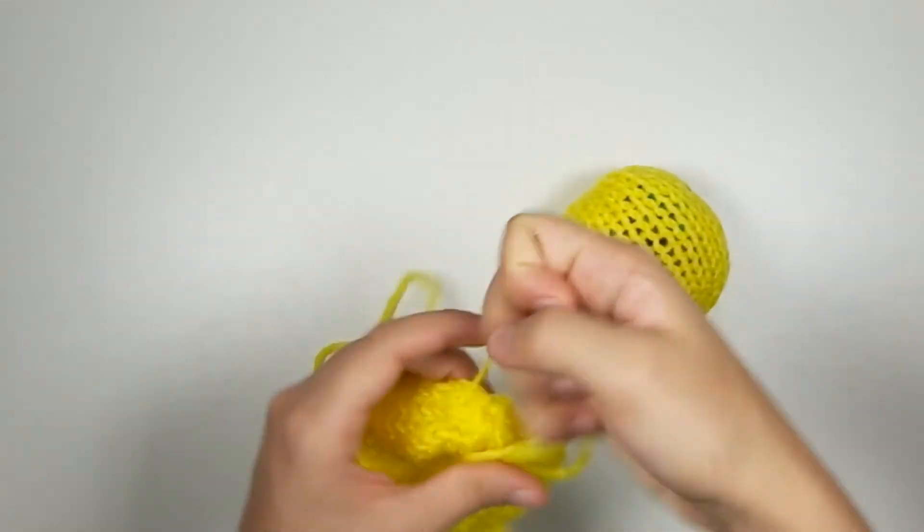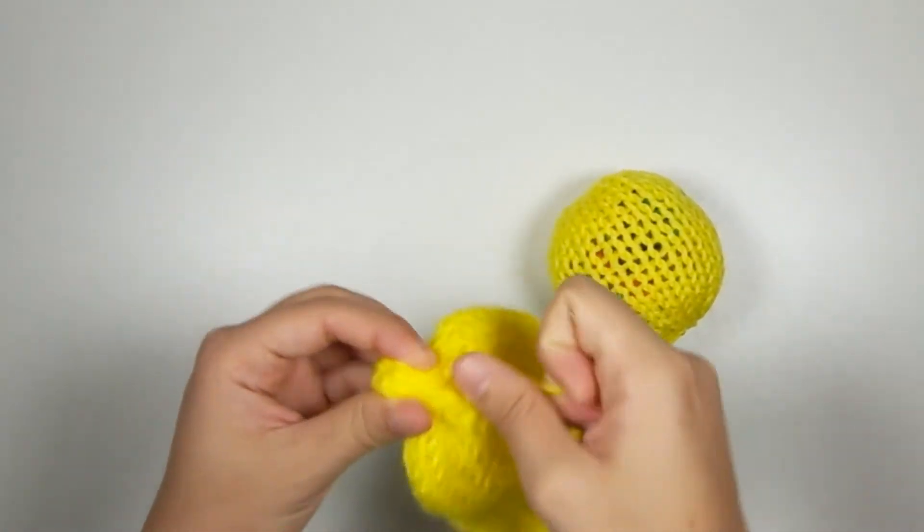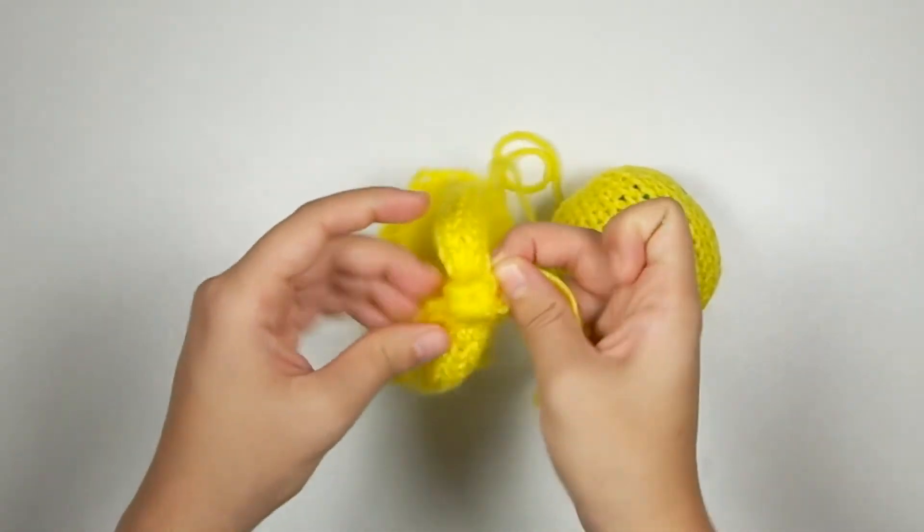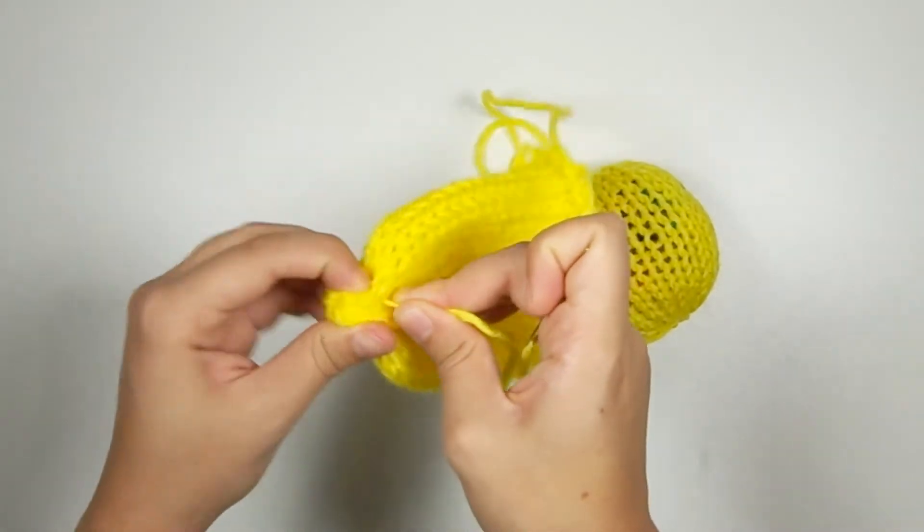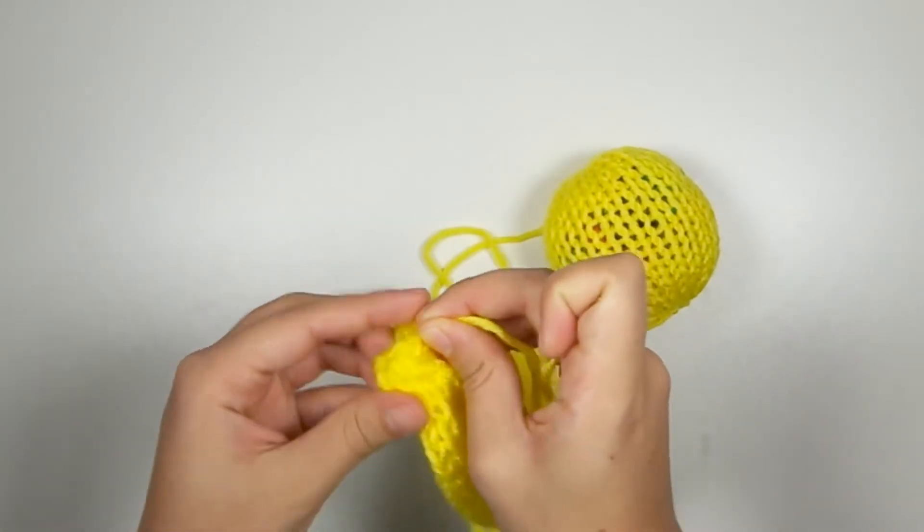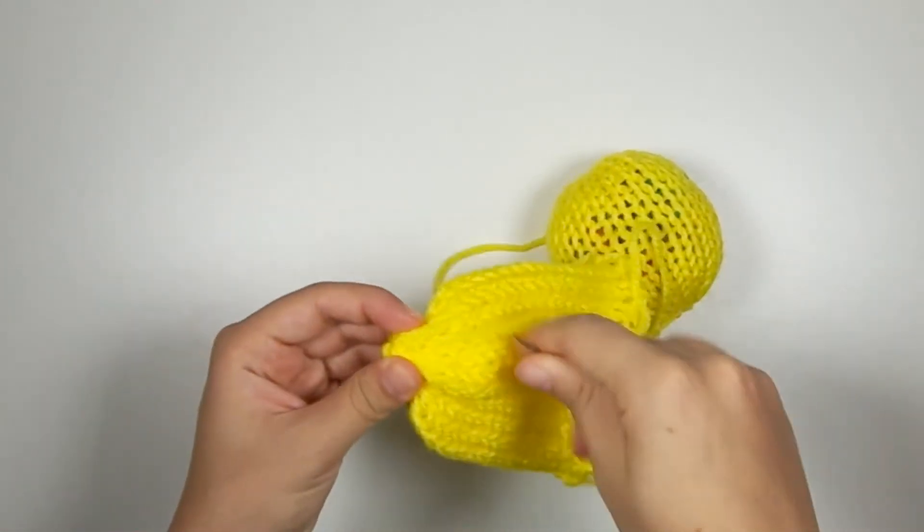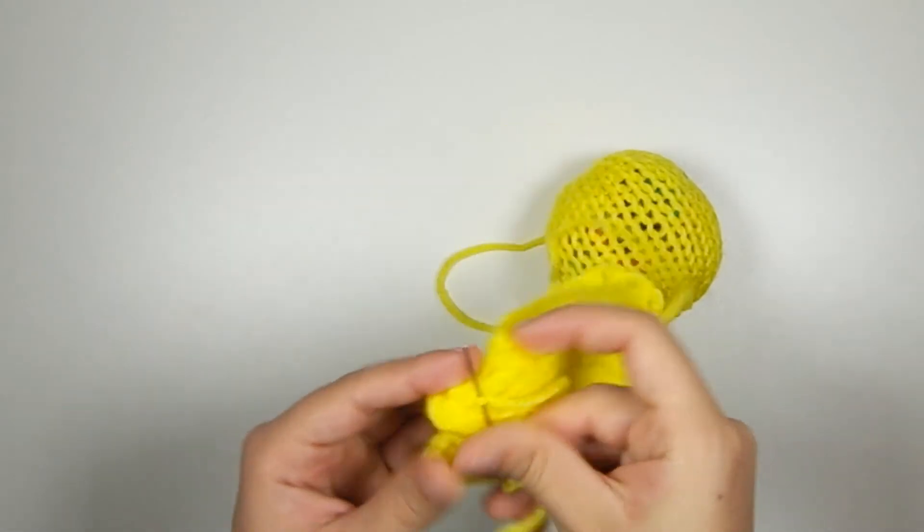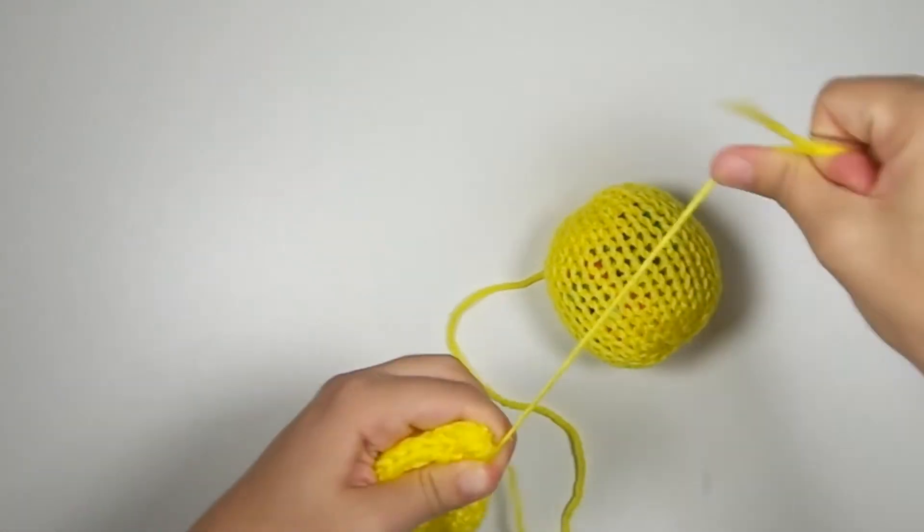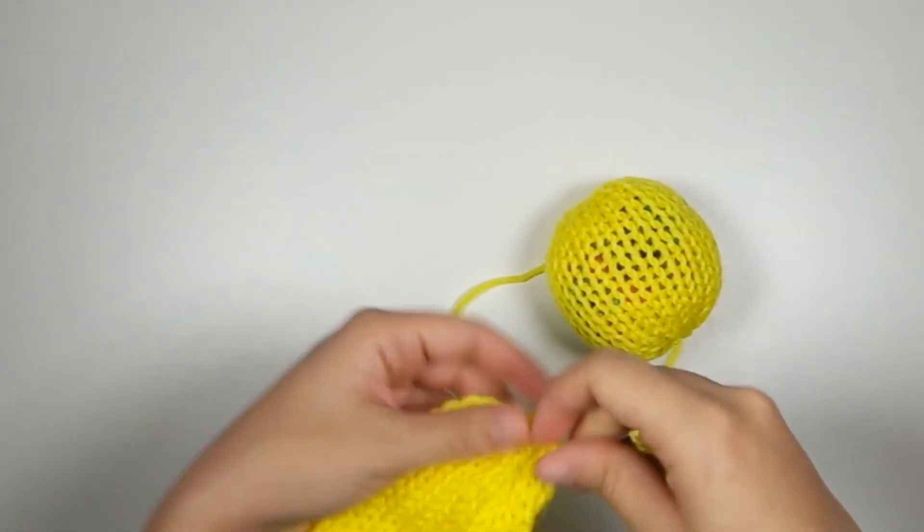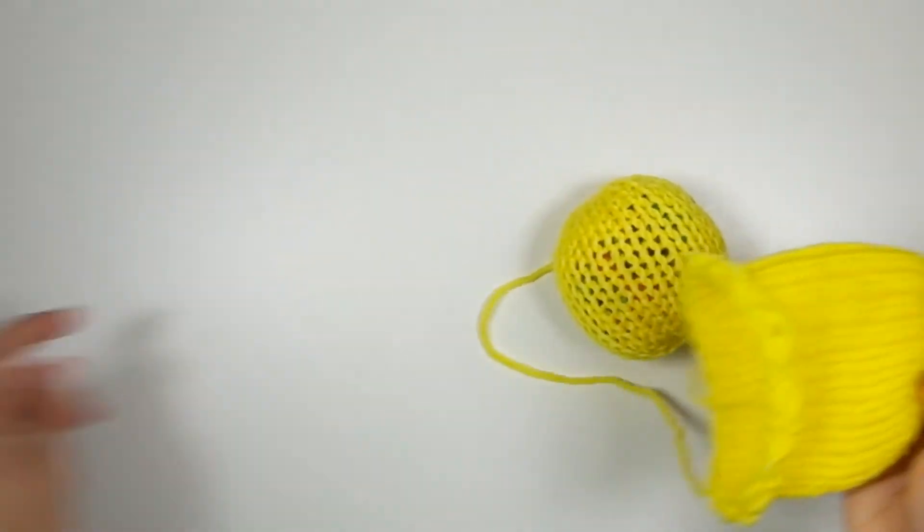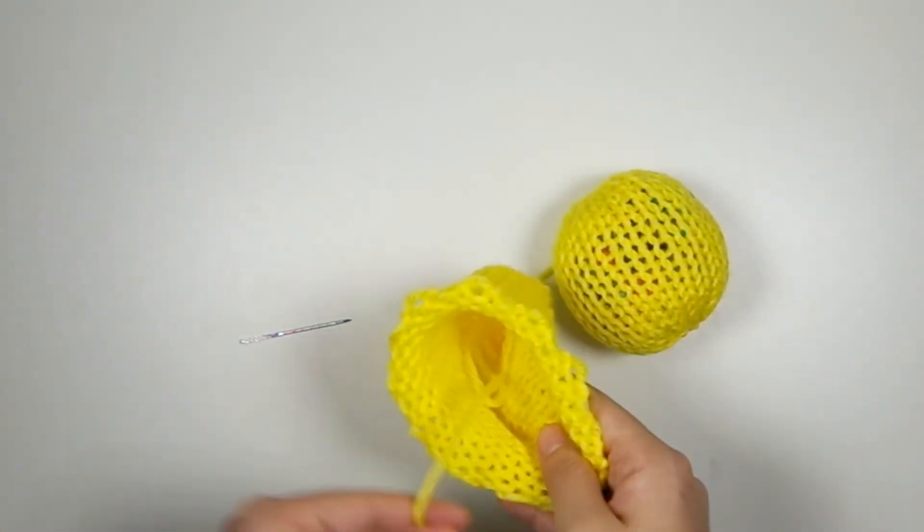So now we're just going to pull very tightly on that seam we just made. And as you can see, that kind of squeezes the end of that cinched section shut like that. And that makes the little knobby part on the end of the lemon. So now I'm going to pick up a little bit of yarn, pull on my yarn real tight, and make a knot. And bring the tail to the inside. And just leave it there, because it can help stuff the lemon a little bit.